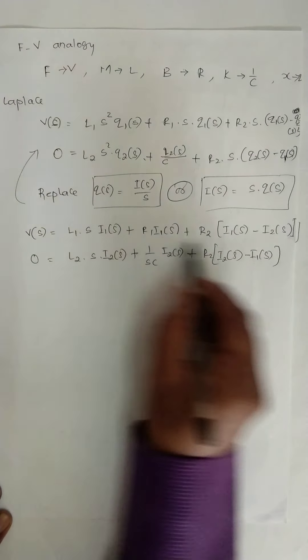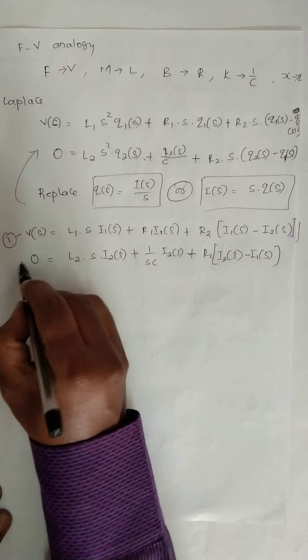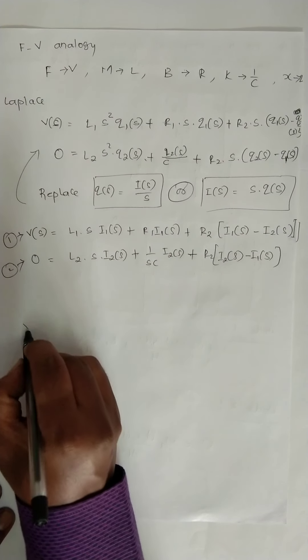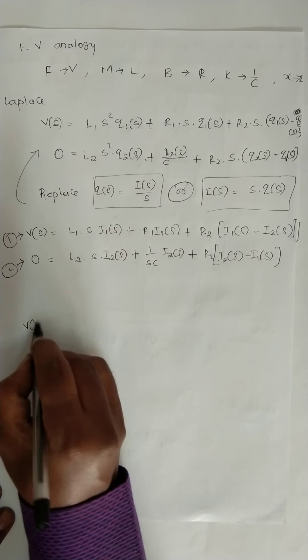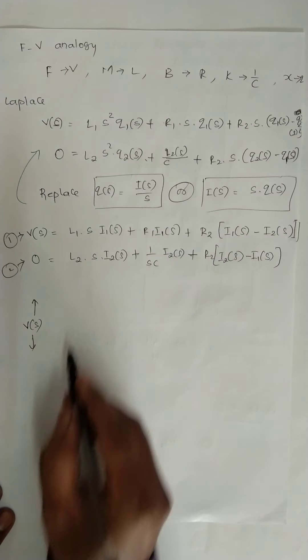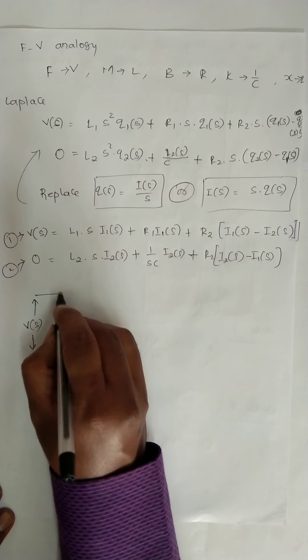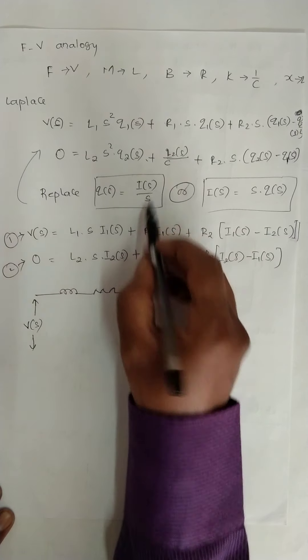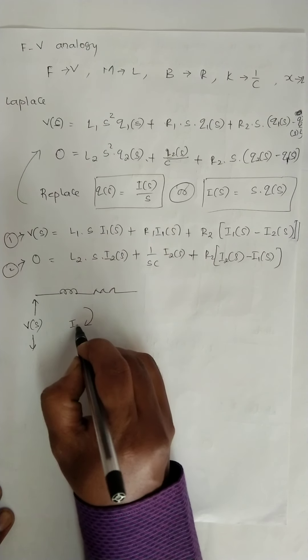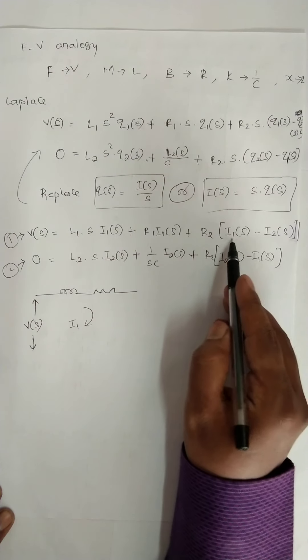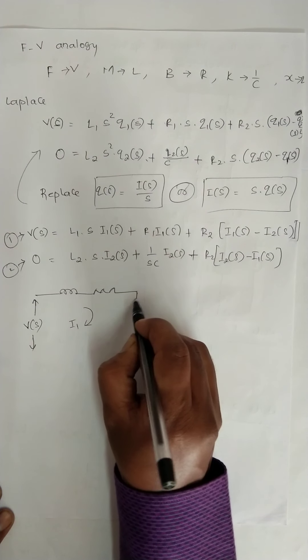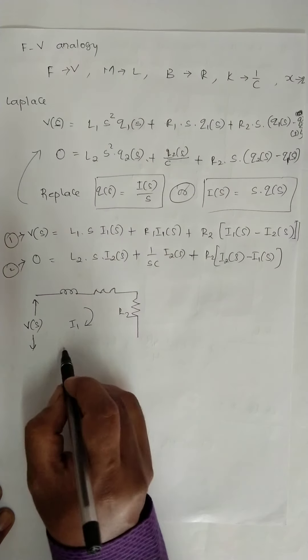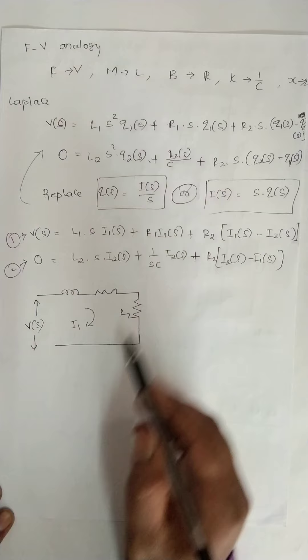Now, draw the diagram. For the first equation, this is node 1. In between we are drawing R2. This is clear. For first equation, we will draw V(s).